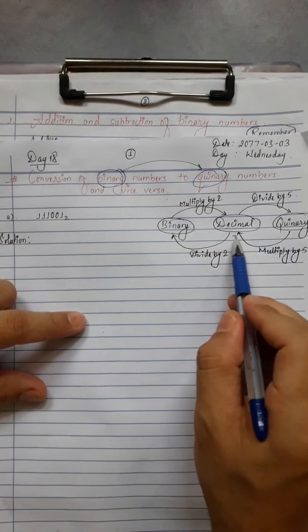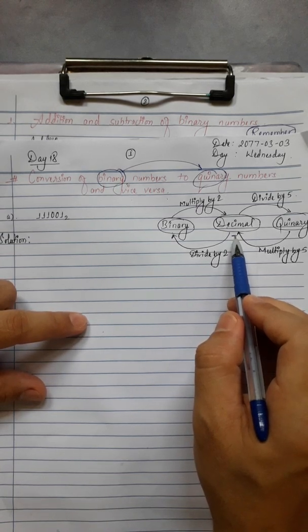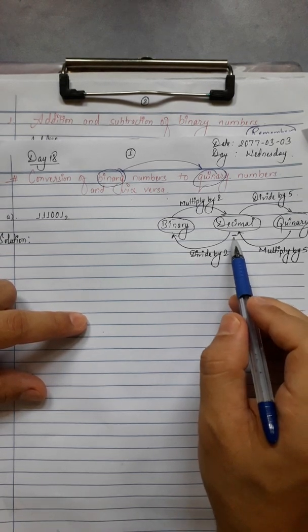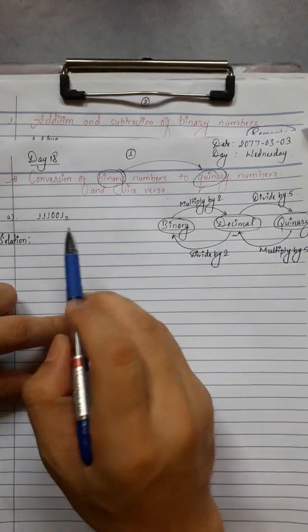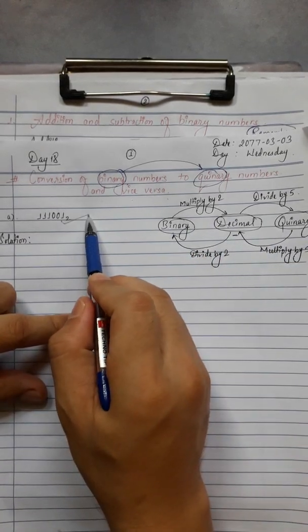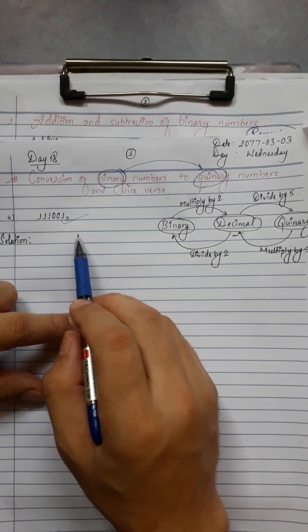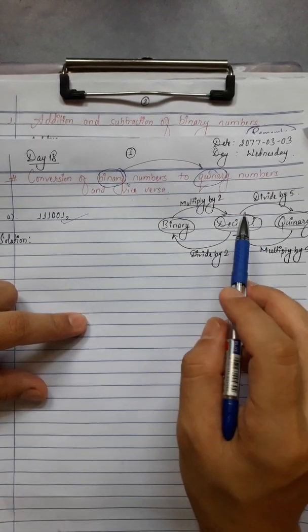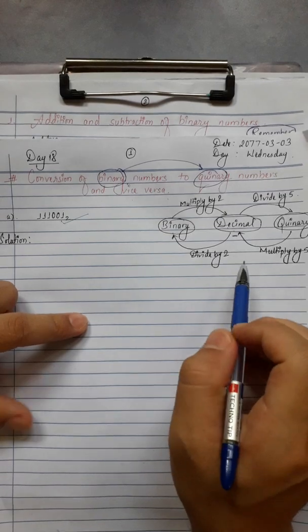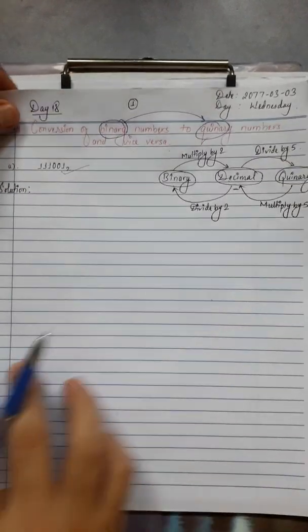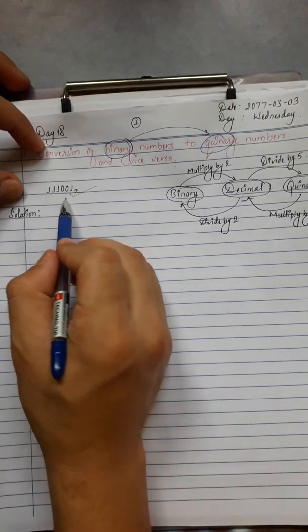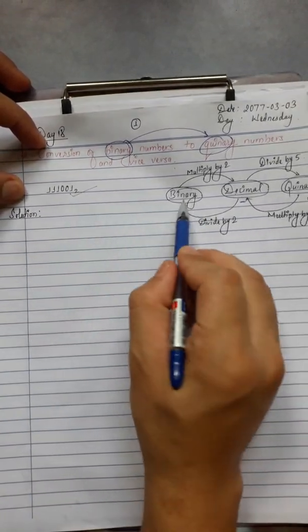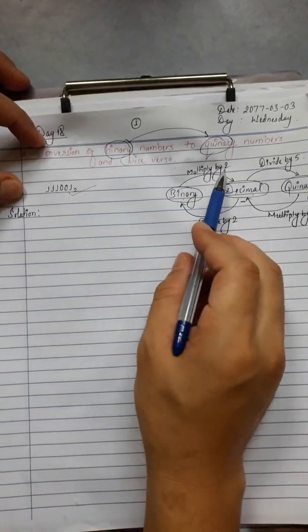Decimal acts like a bridge — just like a bridge connects two sides, decimal connects binary and quinary. So the process is: first change the binary number to decimal, then change that decimal to quinary. Two steps are needed to complete this conversion.